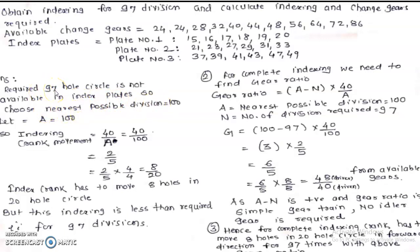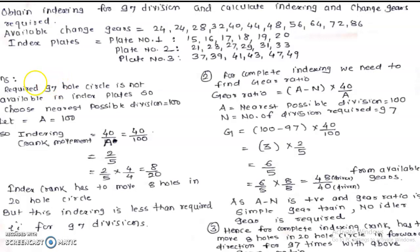Choose a number closer to 97 — not by trial and error, but any number closer to 97. So that when dividing 40 by that assumed number 'a', you get appropriate indexing with a simple crank movement. You can consider 80, 110, 94, 96, 85, or 86. Any number randomly chosen close to 97. Here I have chosen a = 100.